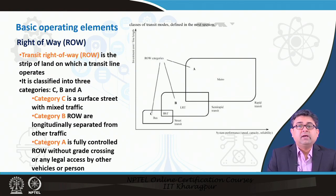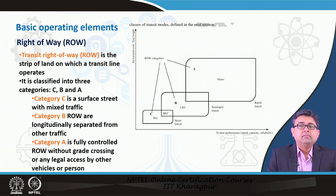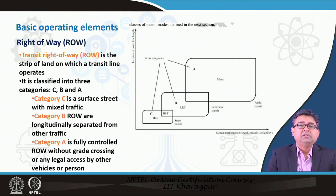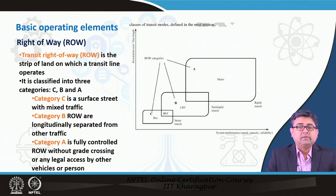When the right of way is longitudinally separated from other traffic, we call it category B. For example, there may be a median on which the public transportation line runs, separated from adjacent vehicular traffic by a tree line or a different pavement type. However, the transit line is still running on the surface. Such types of right of ways are categorized as category B.